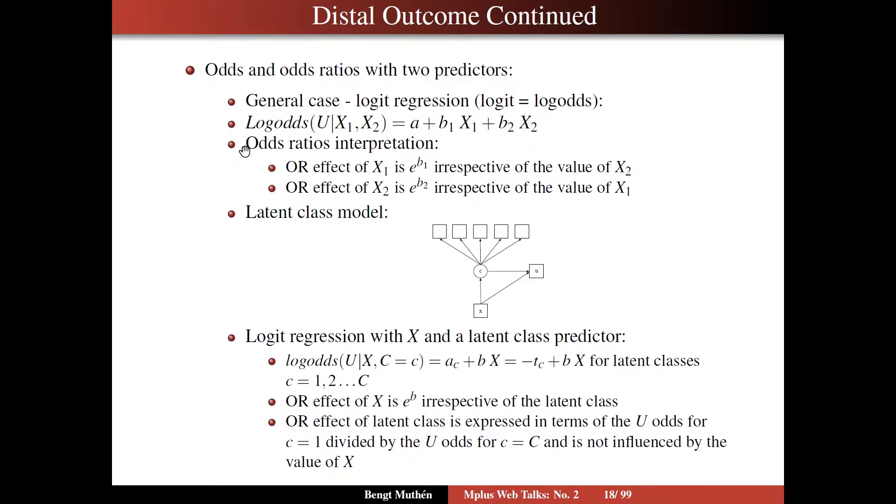The odds ratio interpretation is this: the OR for X1, the effect of X1, is e to the power of B1 irrespective of the value of X2. And the OR effect of X2 is e to the power of B2 irrespective of the value of X1. That's a function of using the logistic regression equation. Probit regression doesn't have this feature.